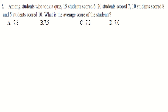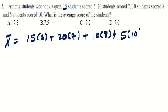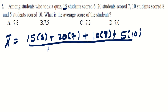Next question: in a quiz, 15 students scored 6, 20 students scored 7, 10 students scored 8, and 5 students scored 10. What is the average score? Mean = (15×6 + 20×7 + 10×8 + 5×10) / (15 + 20 + 10 + 5).